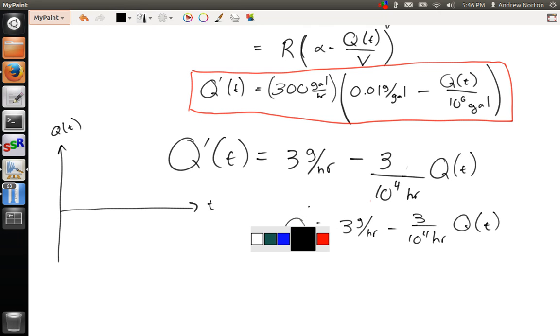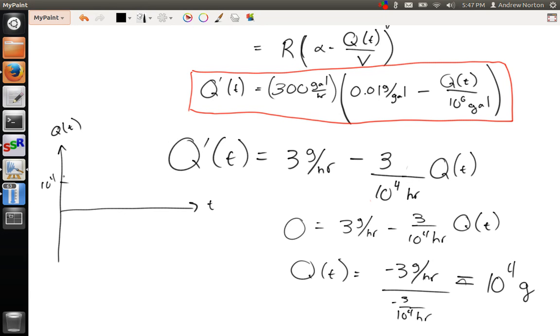So this says that q of t is equal to, we have negative 3 grams per hour over negative 3 divided by 10 to the 4th hours. So this tells us that we have 10 to the 4th grams. So here's 10 to the 4th is our equilibrium solution.